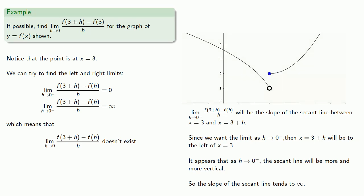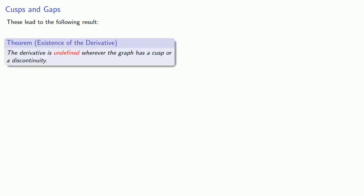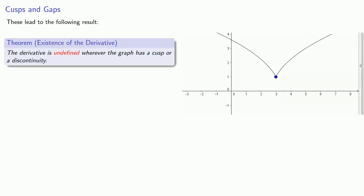This time, notice the graph is discontinuous at x equals 3. This leads to the following important result: the derivative is undefined wherever the graph has a cusp or a discontinuity.